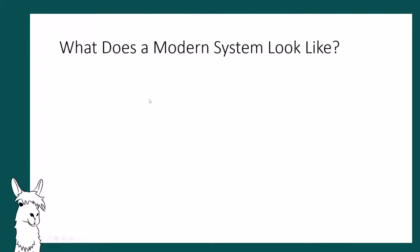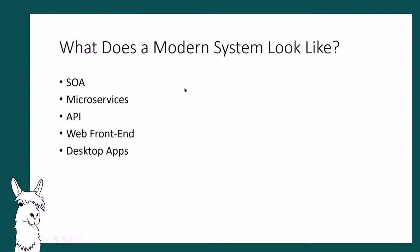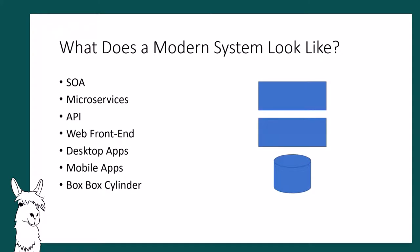I thought I'd talk a little bit about what a modern system looks like. There are various different components — you might be using service-oriented architecture, you might have microservices, APIs, a web front-end, maybe some desktop apps, maybe even a mobile app. But ultimately, I think most architectural designs boil down to this box-box-cylinder model. I think probably 70% of systems out there are working fine with this exact model.